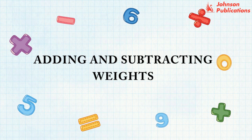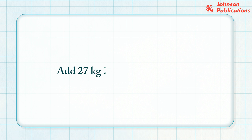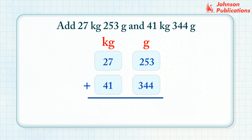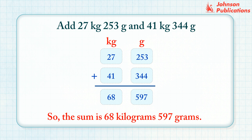Adding and subtracting weights. Add 27 kilograms 253 grams and 41 kilograms 344 grams. Step 1: Arrange the kilograms and grams into their respective columns. Step 2: Add the grams column. Step 3: Add the kilograms column. So, the sum is 68 kilograms, 597 grams.